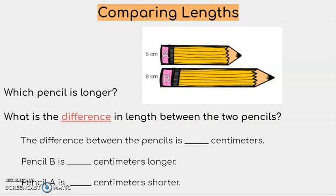Now, what is the difference in length between the two pencils? When we're finding the difference, we need to subtract the two numbers. So 8 minus 5 is 3. The difference between the pencils is 3 centimeters. Pencil B is 3 centimeters longer, and pencil A is 3 centimeters shorter.